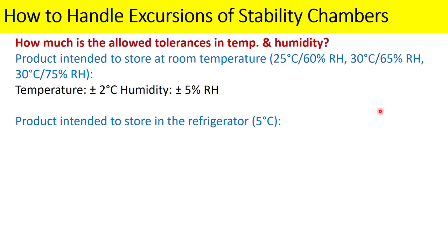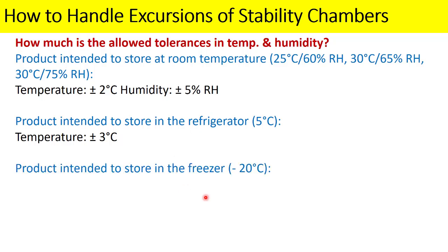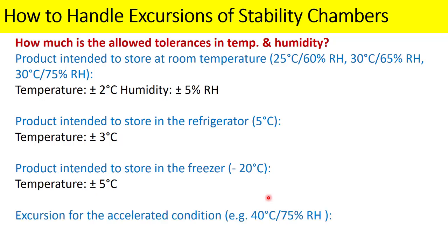If your product is intended to be stored in the refrigerator at 5°C, the allowable tolerance for temperature is ±3°C. If stored in the freezer at -20°C, the allowable tolerance is ±5°C. For products on accelerated condition at 40°C/75% RH, the allowable tolerance for temperature is ±2°C and for humidity it is ±5% RH.